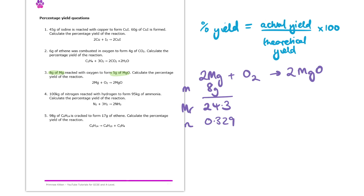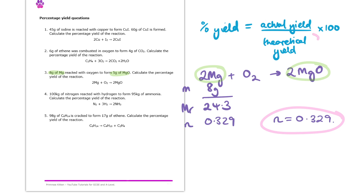Looking at our balanced equation, we have a 2 to 2, or 1 to 1 ratio, which means we will theoretically expect to make 0.329 moles of magnesium oxide. So for our theoretical yield we have 0.329 moles. Looking back at the question, we formed 5 grams of MgO, so we need to work out how many moles that is, which will give us our actual yield.